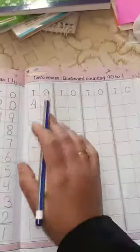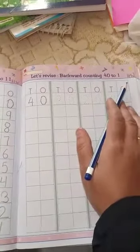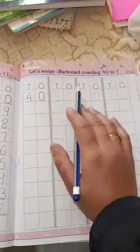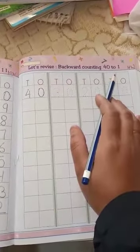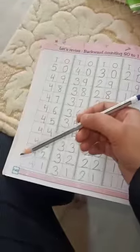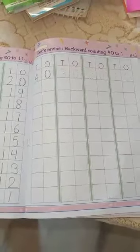On second page, you have to do backward counting 40 to 1. We will revise here 41 to 1, backward counting. So page number 140 and page number 141, it is your homework for today.